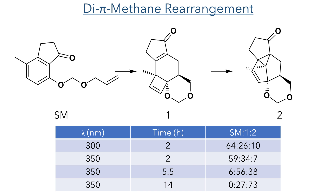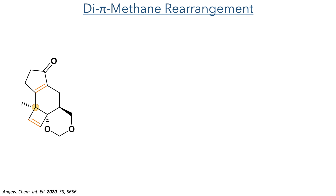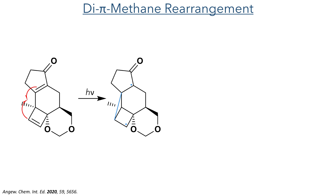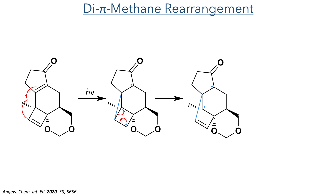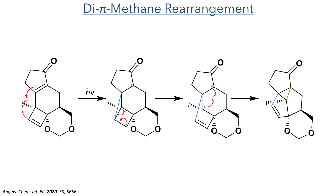During the studies to optimise this reaction, the authors discovered that another product was also formed. To maximise the yield of the target compound, the researchers found that using irradiation at 350 nm and a reaction time of 5.5 hours favoured the formation of the target product while maximising conversion of the starting material. Longer reaction times led to the formation of the undesired compound 2, which was formed by a di-pi-methane rearrangement. This reaction can occur when a central sp3 hybridised carbon is bonded to two carbon atoms bearing pi bonds. Irradiation with UV light promotes the radical coupling of these two carbon atoms, generating a triplet intermediate with two radicals. The strained 4-membered ring then opens to form a cyclopentanone and leaves the radical on the central sp3 hybridised carbon, which then combines with the radical produced in the first bond-forming reaction to form a new cyclopropane ring and complete the rearrangement.